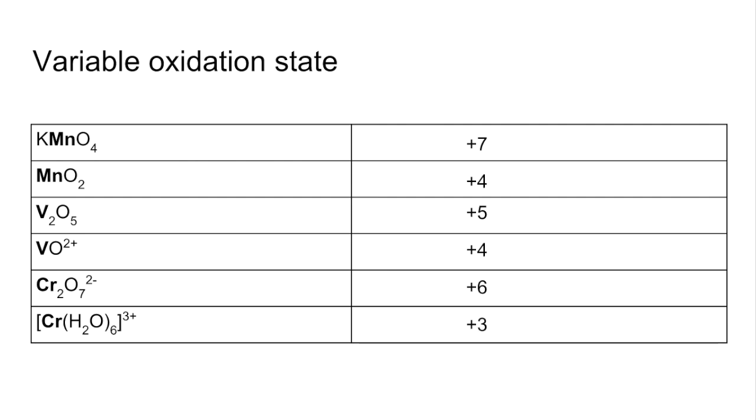If you compare that with group 1 and group 2 elements, sodium in group 1 can only exhibit the plus 1 oxidation state. Magnesium in group 2 can only exhibit the plus 2 oxidation state. Transition elements, however, they can exhibit variable oxidation states.